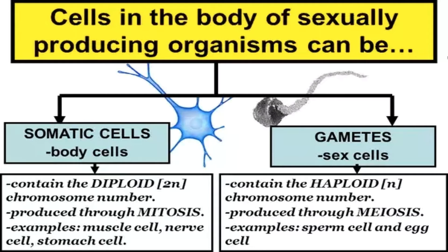Examples of somatic cells are your muscle cells and nerve cells. You can also have your gametes, or sex cells. When you look at the study guide you'll see somatic and sex cells and the difference between them: sex cells are haploid, meaning they only contain one copy of the chromosome, and they are produced through meiosis.